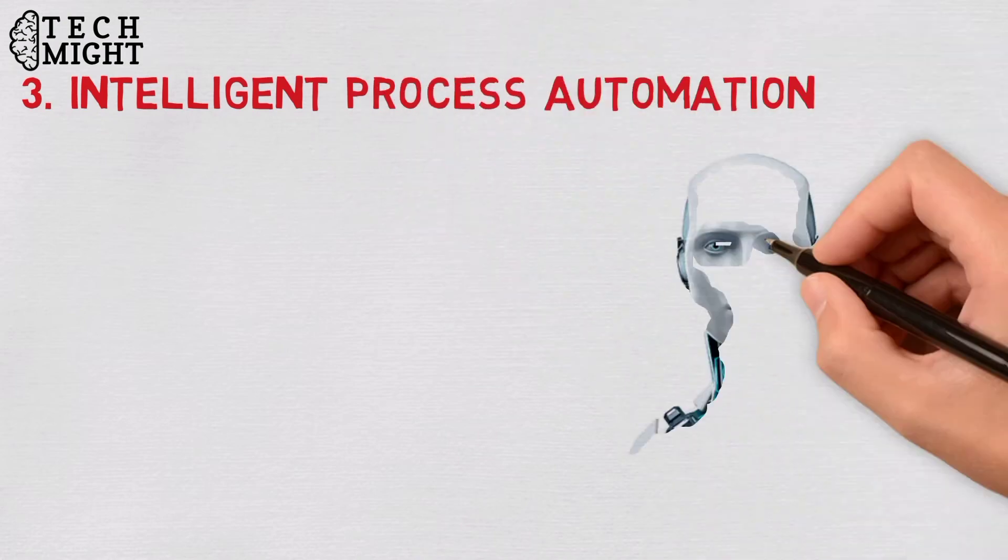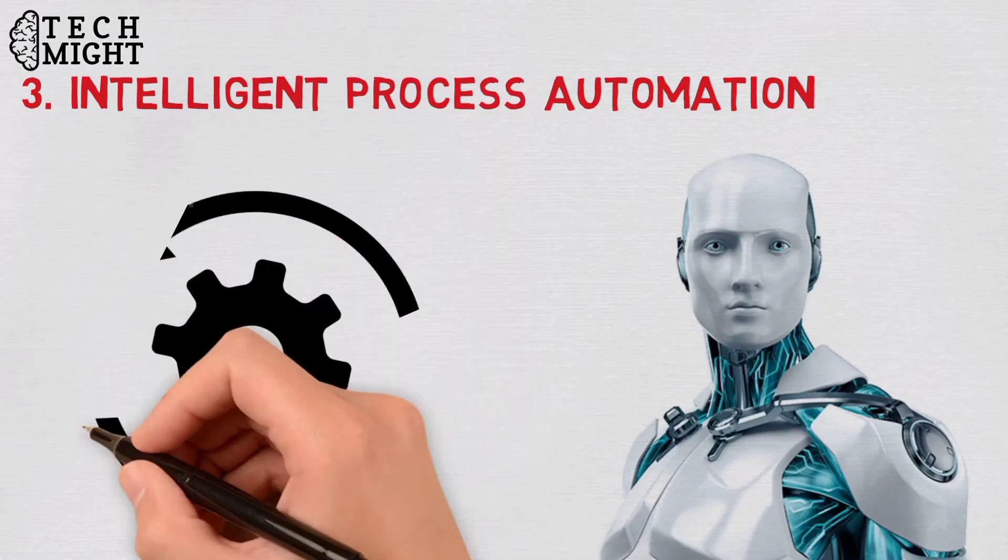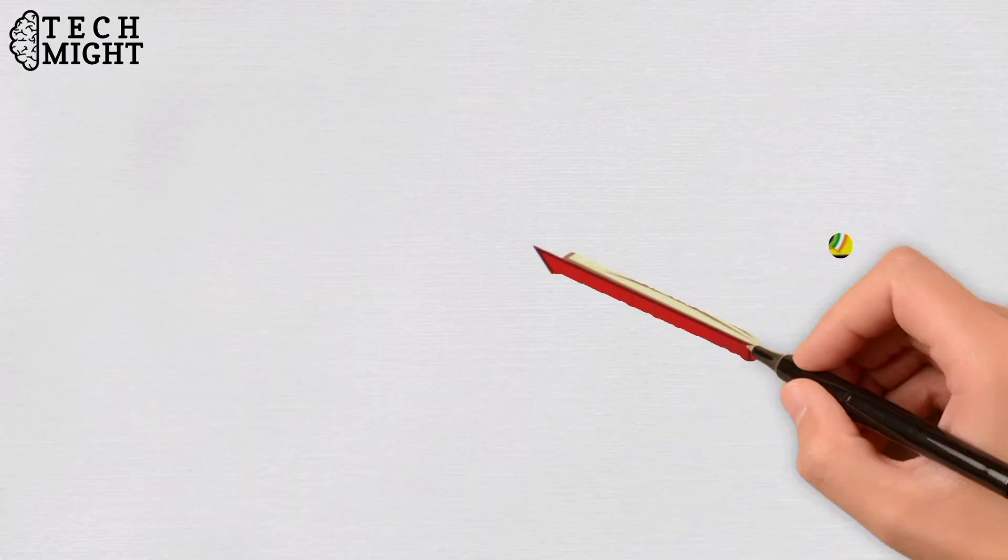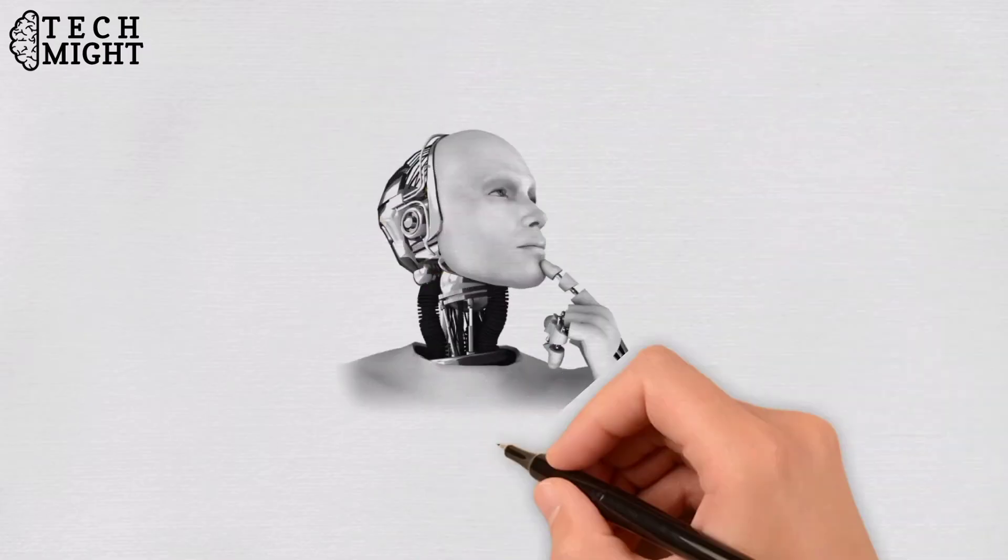Intelligent Process Automation. Robotic process automation is basically the idea that anything that can be automated should be automated. This year, we have discovered something even more fascinating: intelligent process automation.